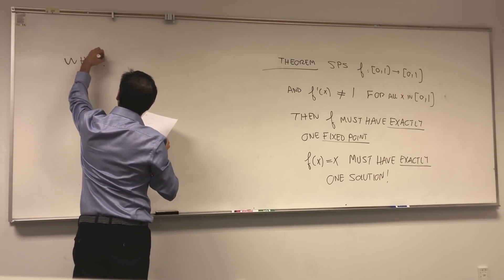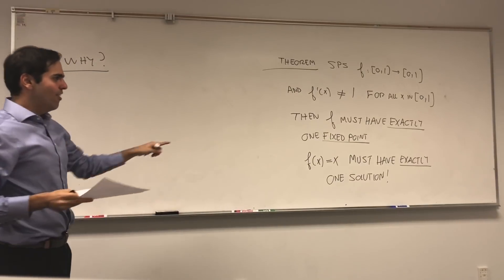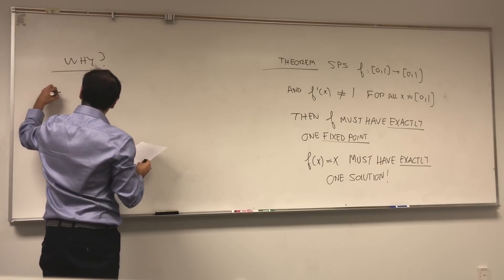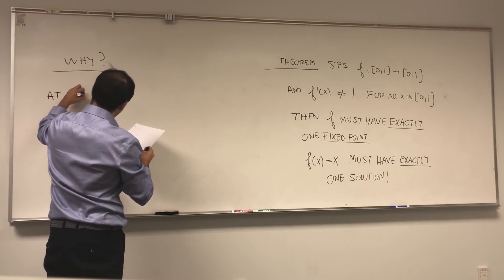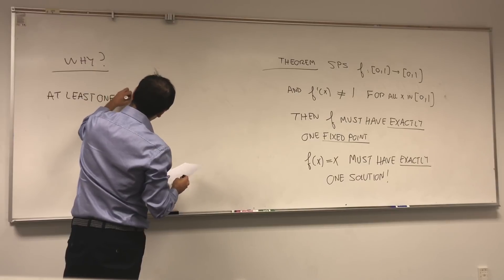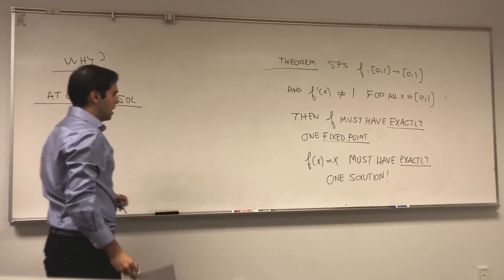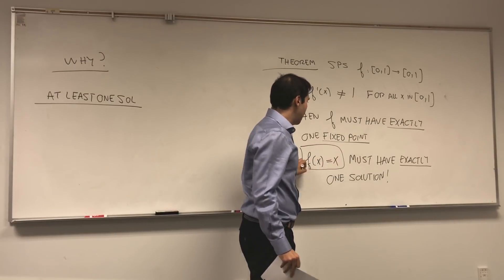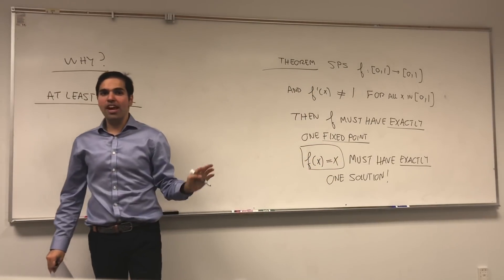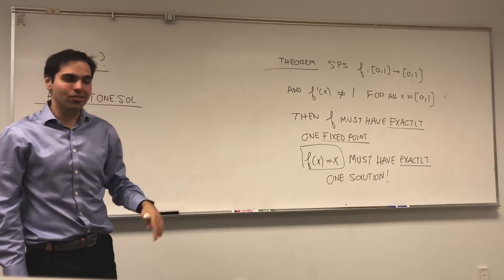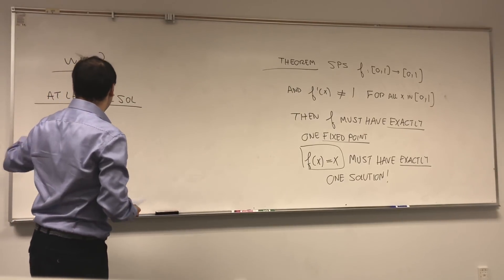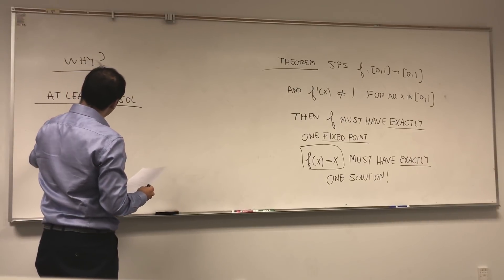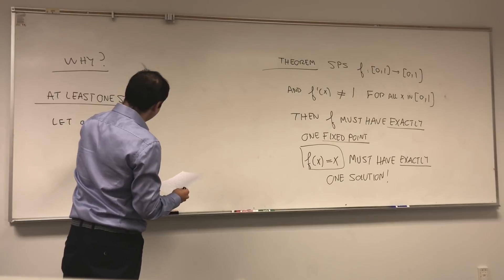So here's the proof. Why? First of all, let's show that this equation must have at least one solution. And the way we want to do this, we want to take this equation and turn it into an equation that talks about zeros. And for this, let's define a helper function. So let g(x) be f(x) minus x.